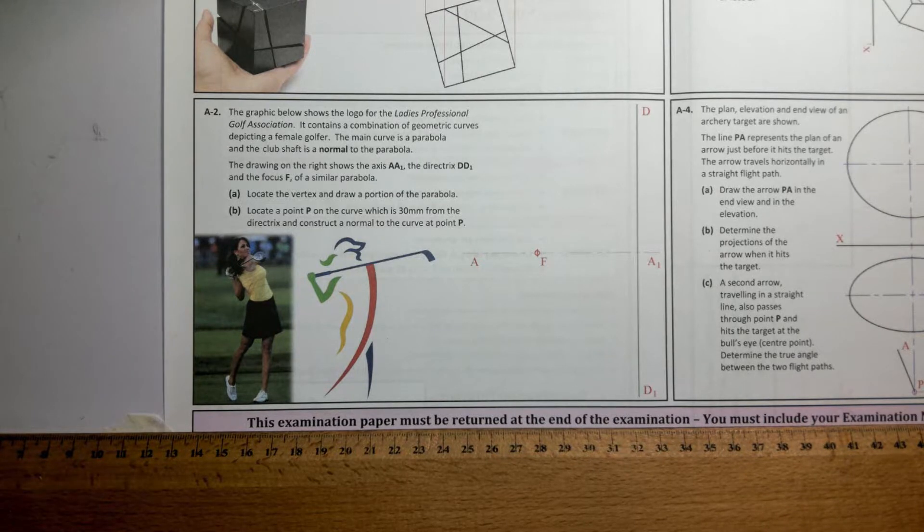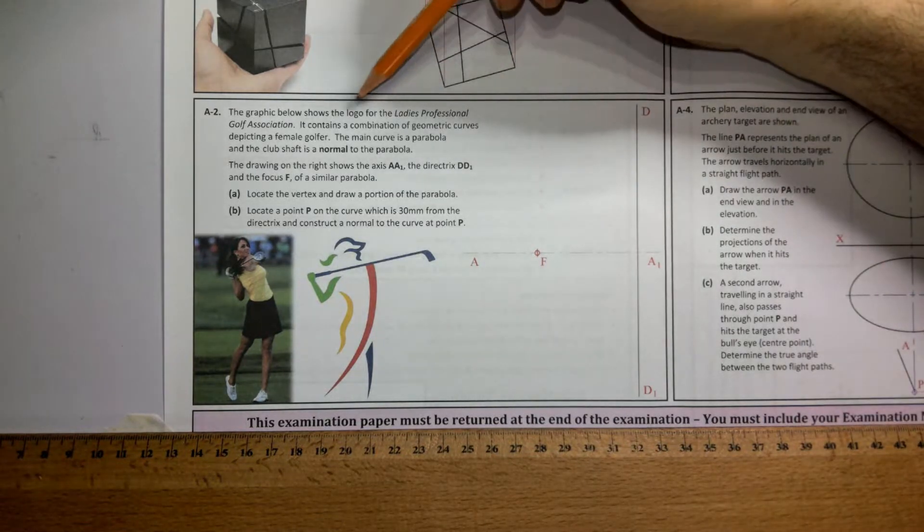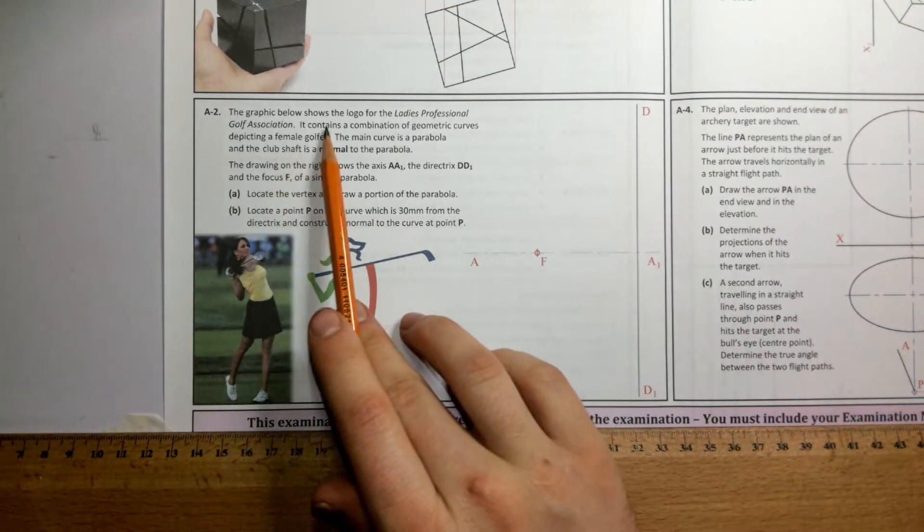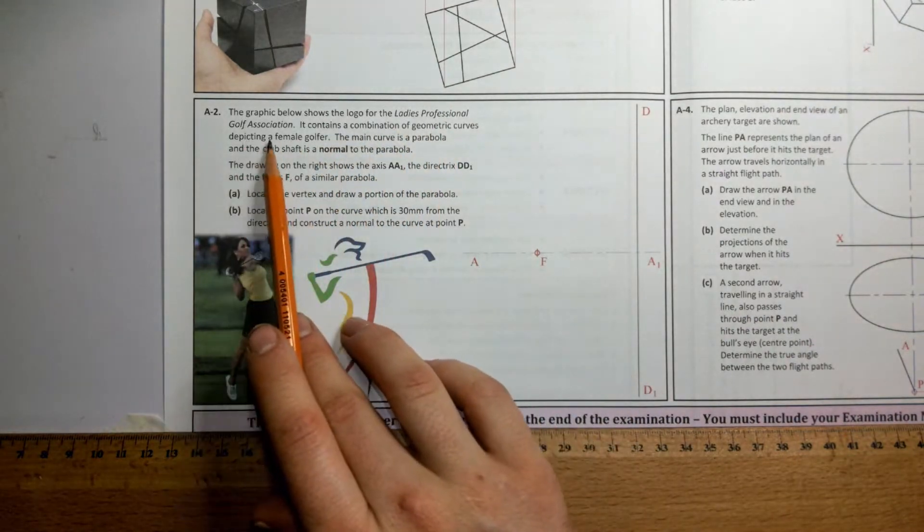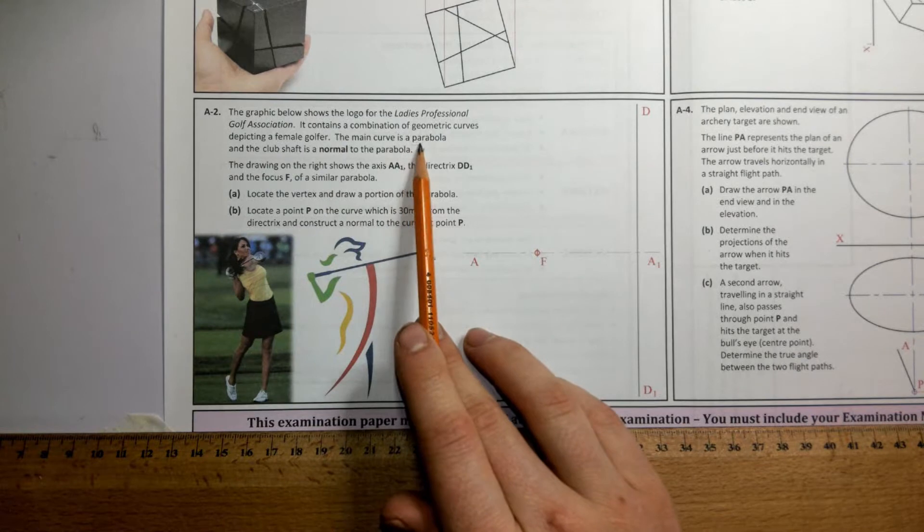So this is our 2017 question A2. The graphic shows the logo for the Ladies Professional Golf Association. It contains a combination of geometric curves depicting a female golfer. The main curve is a parabola.